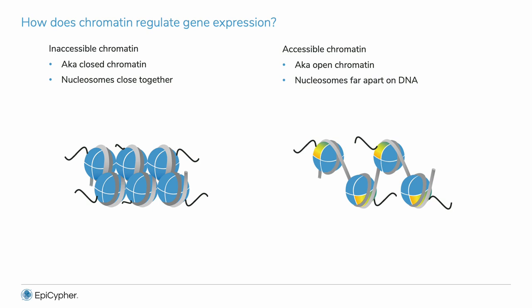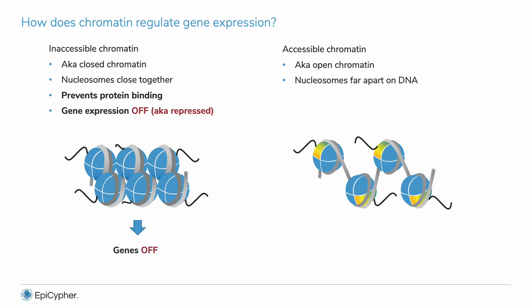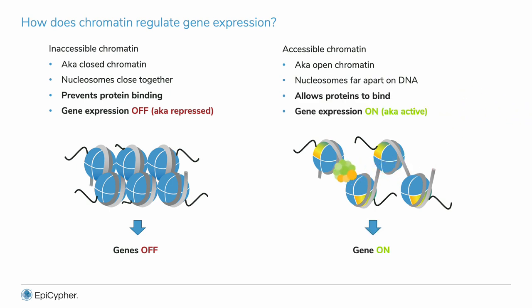Closed chromatin prevents proteins from binding and represses genes, or keeps them in an off state. In contrast, accessible or open chromatin allows proteins to bind DNA, which generally turns genes on.